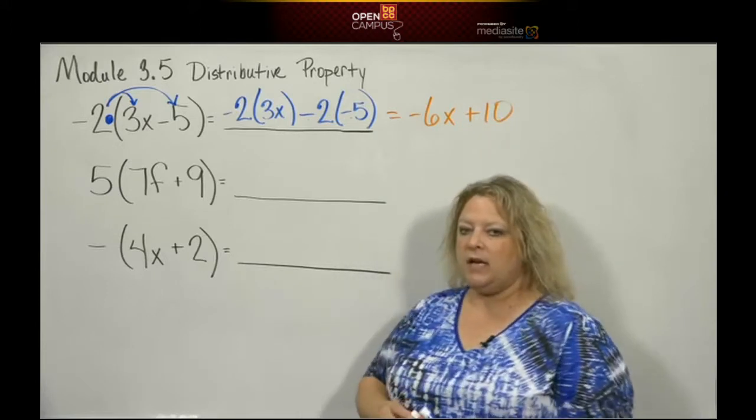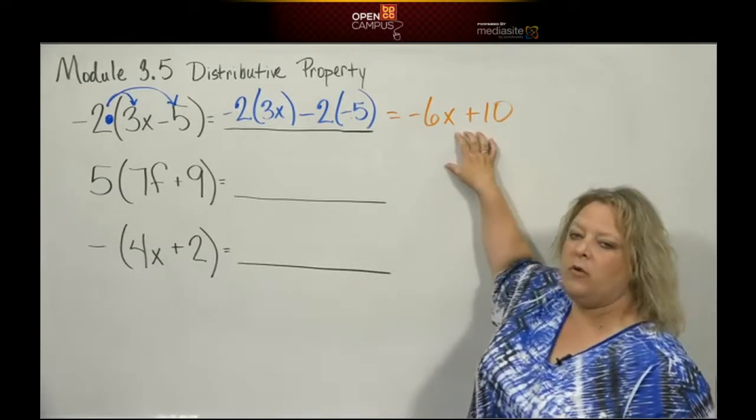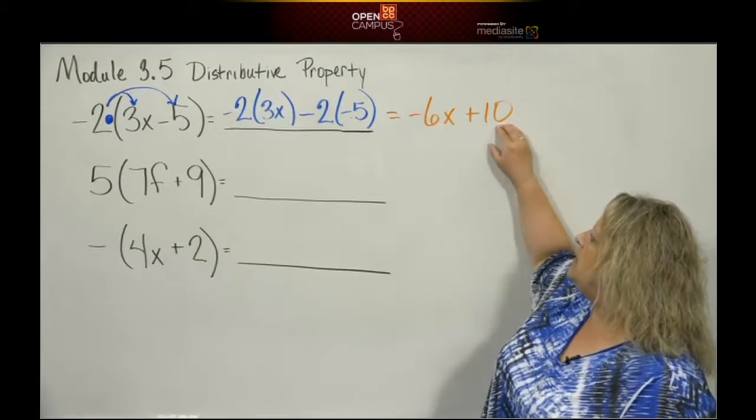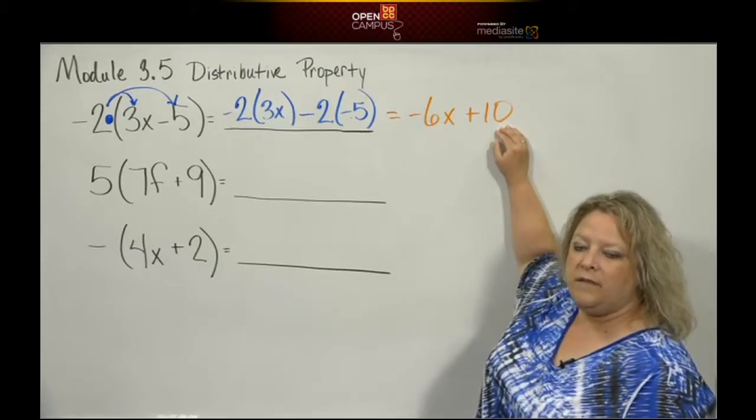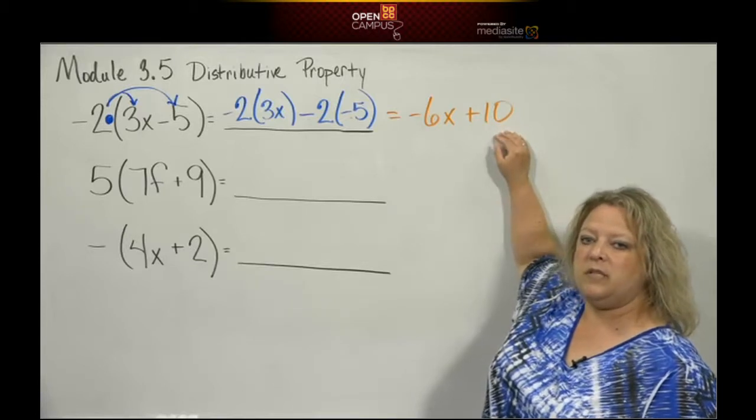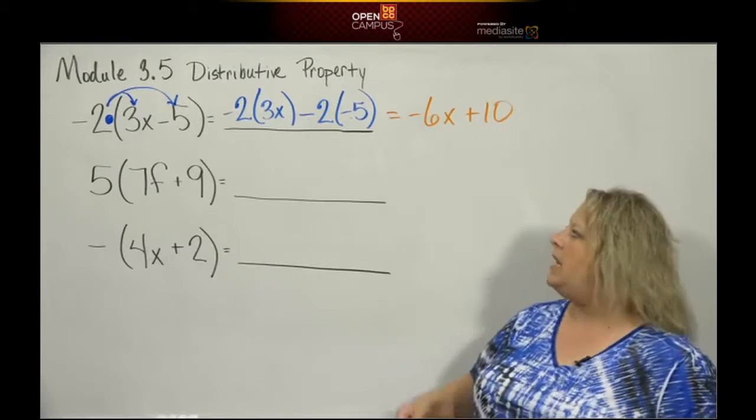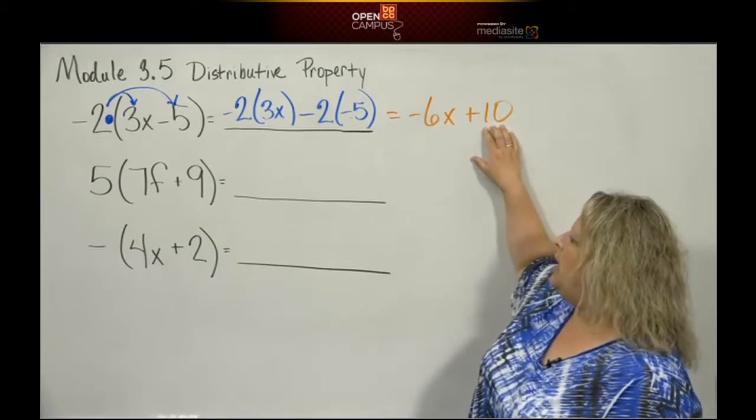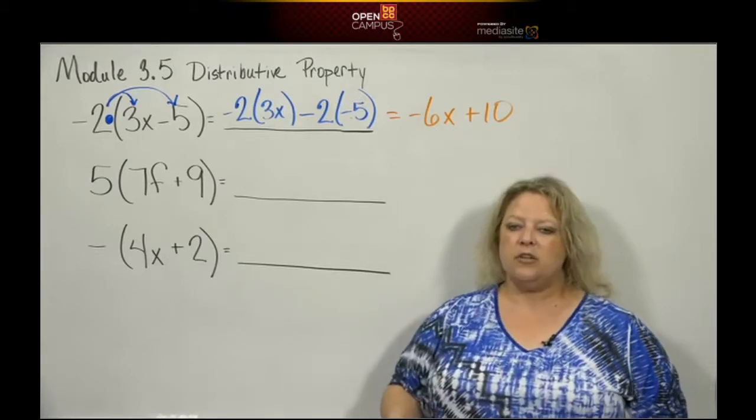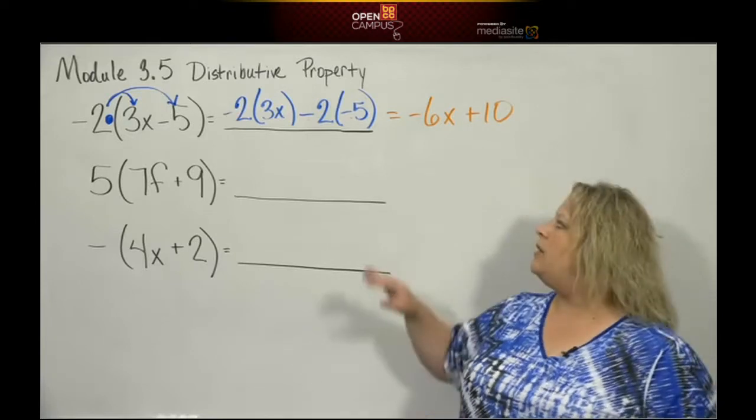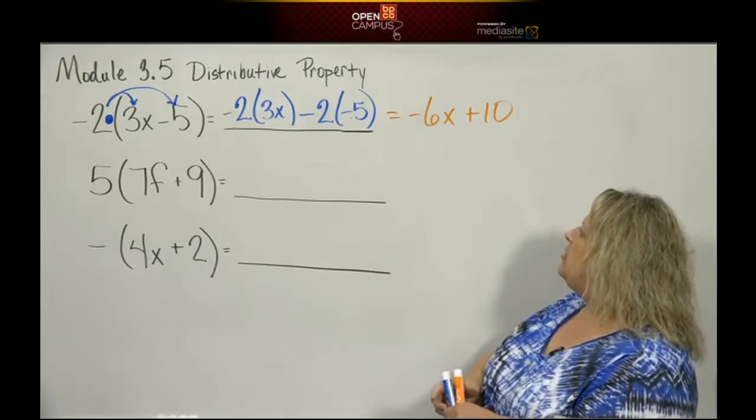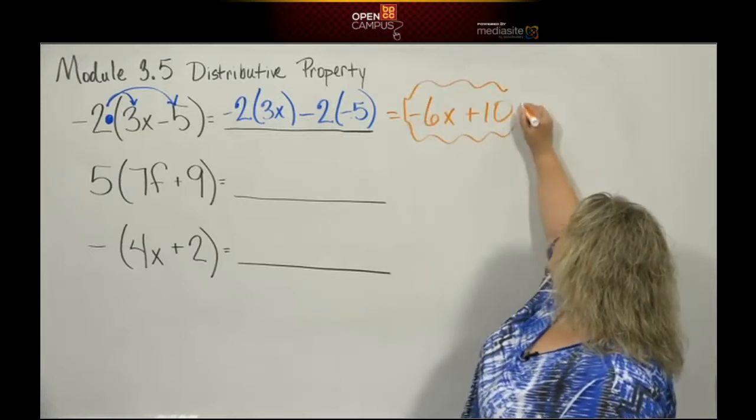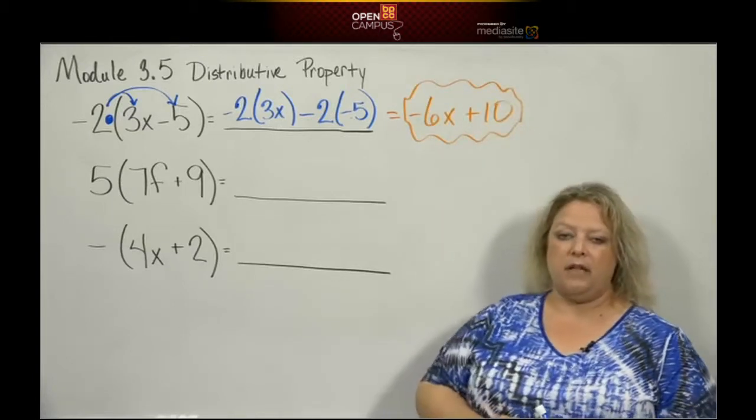Now when I get out here, you want to look at what you have left over. If you have an x here, and let's say I had 10x here, they would both be considered like terms, so at that point I would want to add them together. But because this has a variable and this does not, they're not like terms, so you cannot put those together. So this is just your answer. I just like to bubble my answers, but that's my final answer.